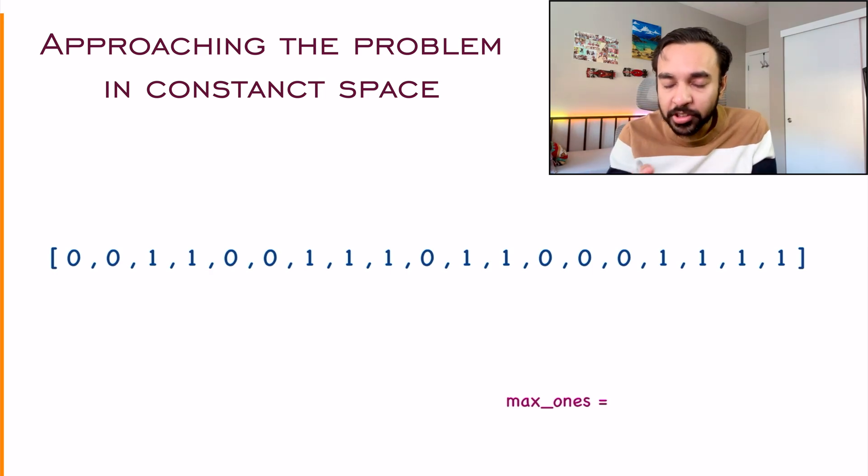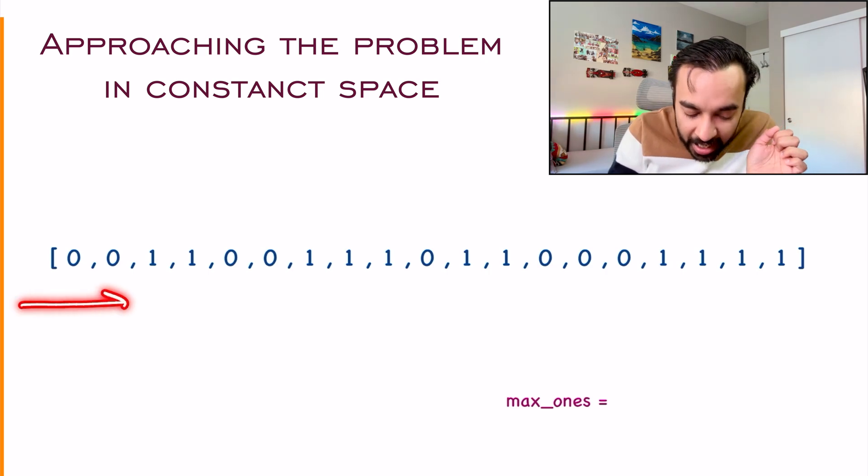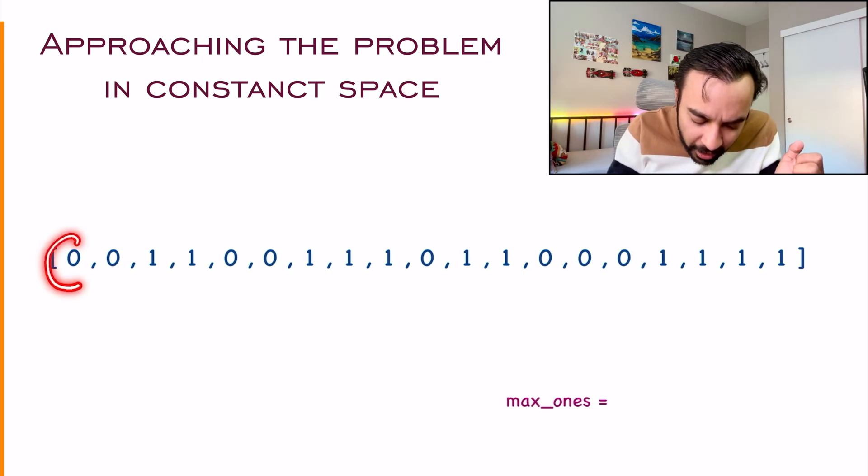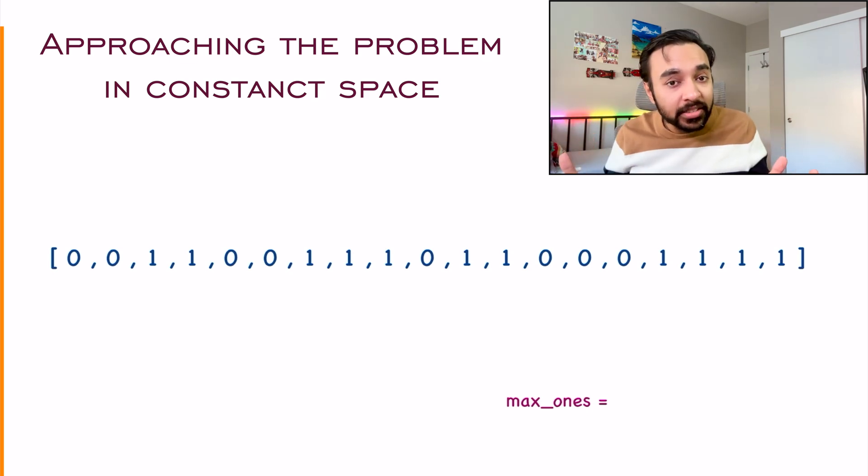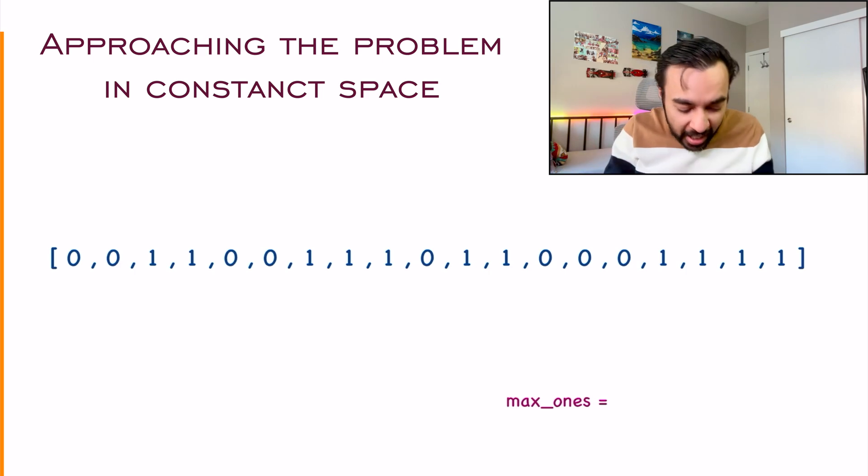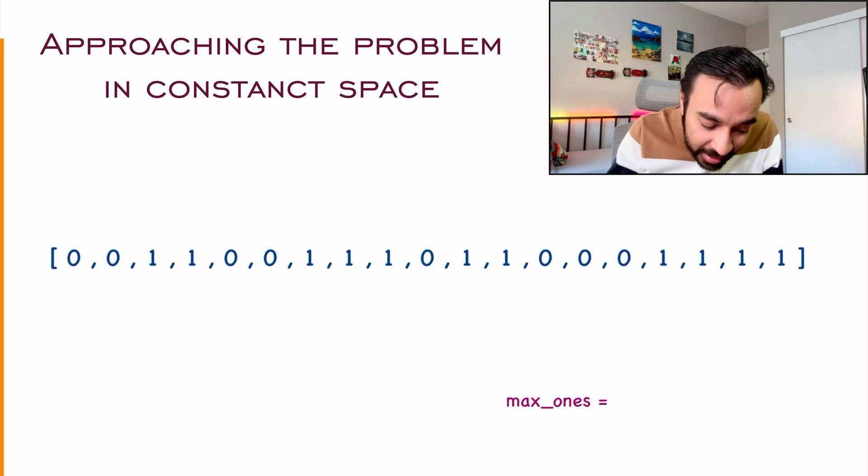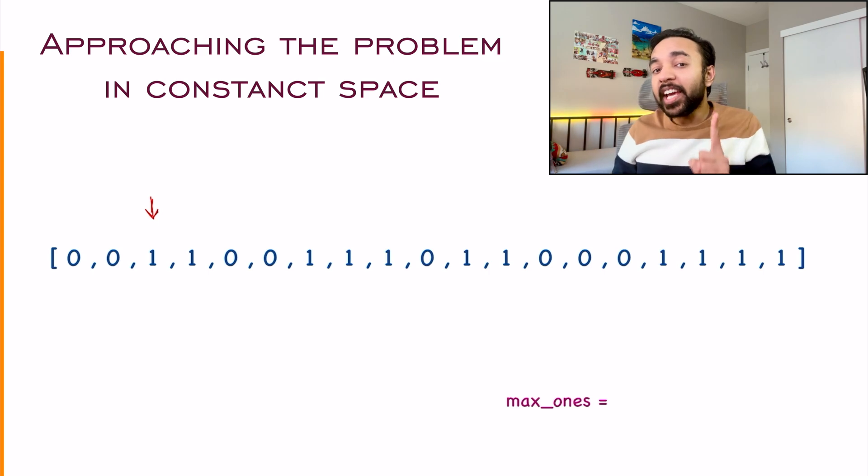So when you start to approach this problem, a thought will come to your mind. Okay, what I can do is I can start to scan my array from the very beginning, right? And when you are scanning, you see that the first element is a zero. So technically, you only have to find out the consecutive ones. This zero is of no use to you, correct? So what I can do is I can just skip this and I can move on to my next element. As soon as I move on to my next element, that is a zero again. So that is once again useless for us. What we will do is we will simply skip it and then move on to the next element.